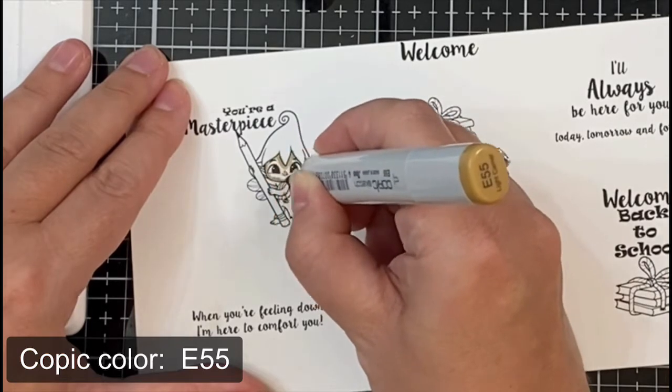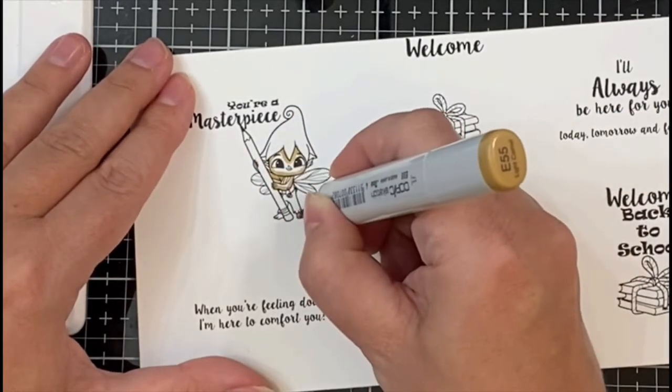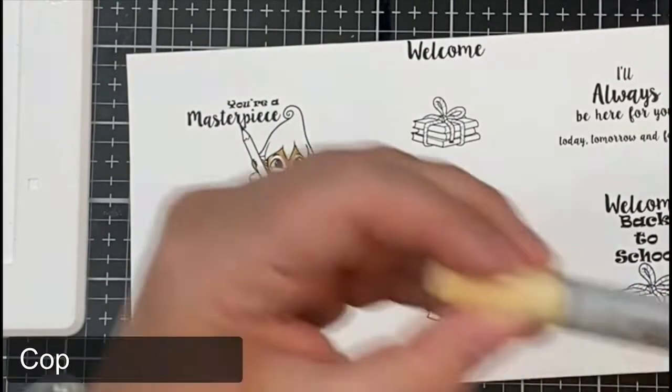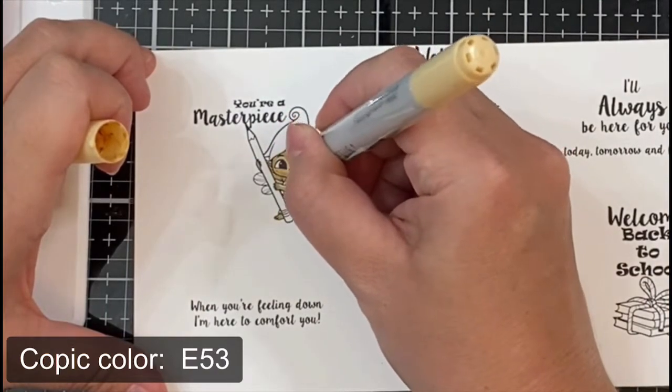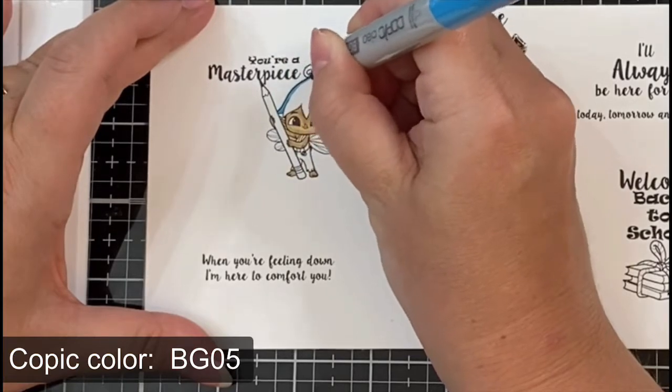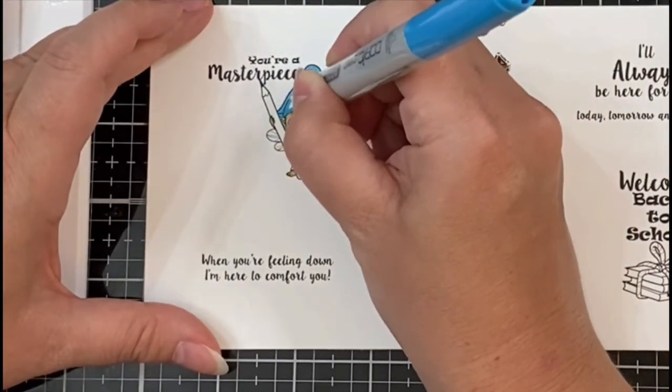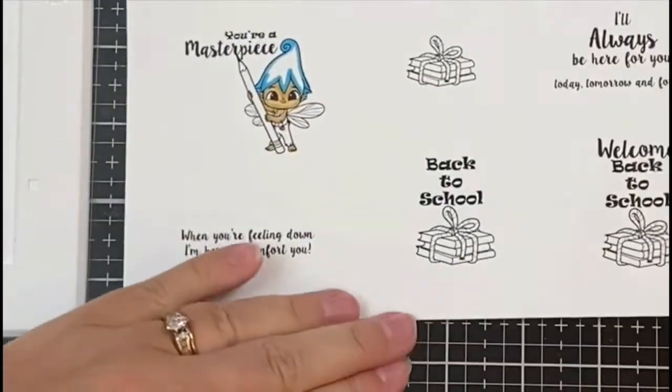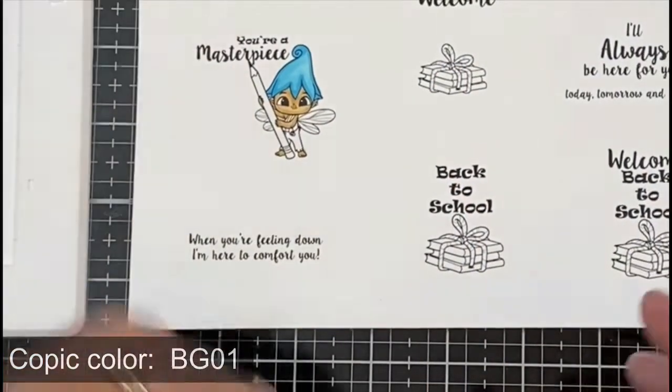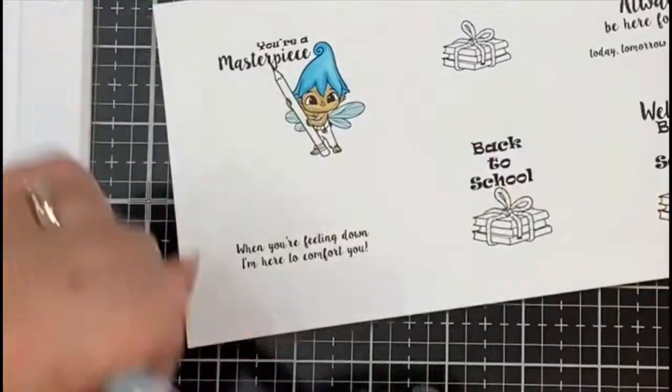I'm going to start with coloring his skin using E55 first along his hairline and anywhere that there should be a shadow, and then next I added E53 and just kind of blended those two shades together. Now for his hat I started with BG05 and I colored along the edges, and then I added BG01.